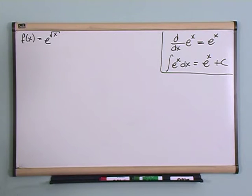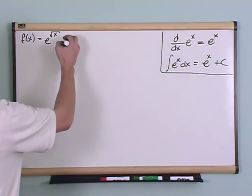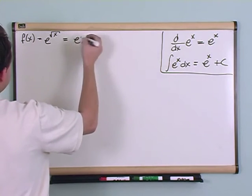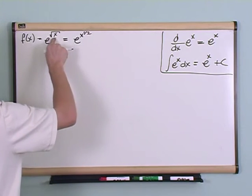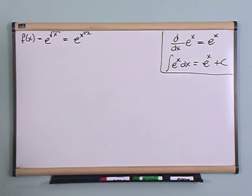Well, you have to use that chain rule that we had talked about. The way I like to do it, right off the bat, is just write it as e to the x to the one half. I like to write all of my square roots as powers of one half.